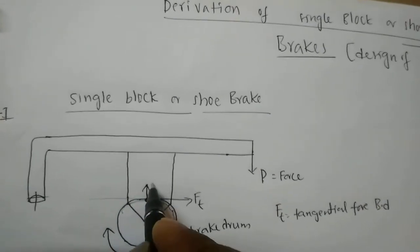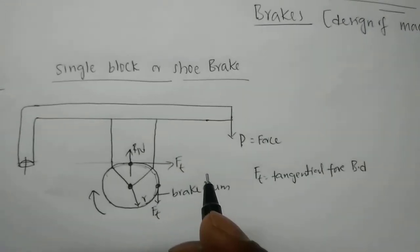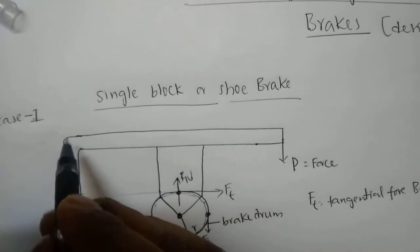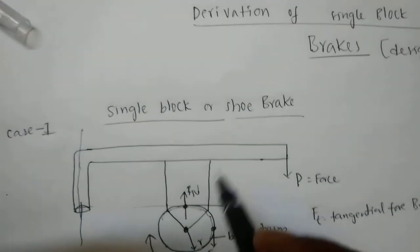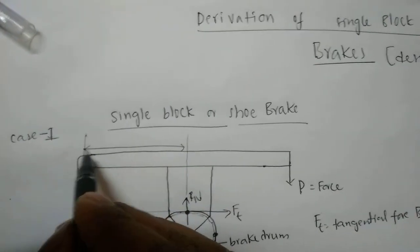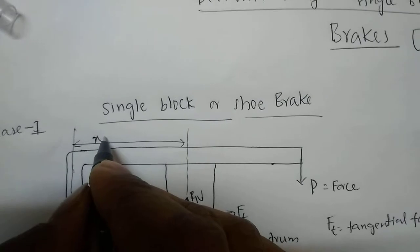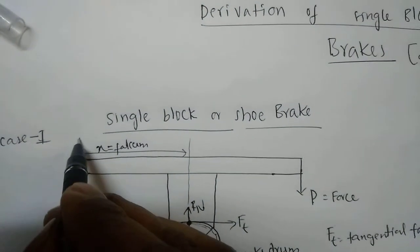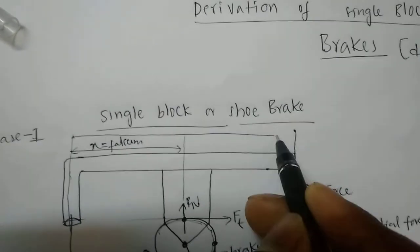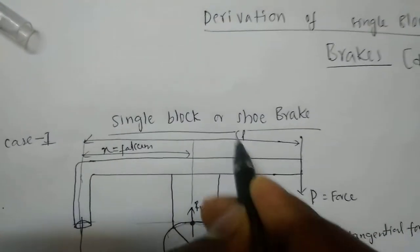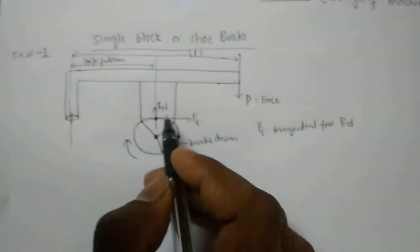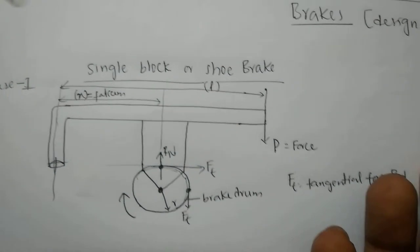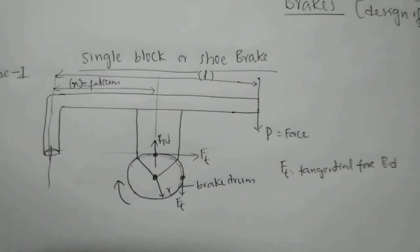We also need distances. The distance between the axis and the fulcrum is x, sometimes called the fulcrum distance. The distance from the fulcrum to the applied force P is L. With the required forces and lengths identified, we can formulate the equations using moment diagrams.